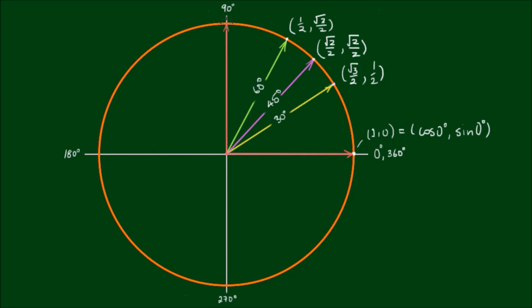Similarly for 90 degrees, the Cartesian coordinates here are 0, 1. And thus the cos of 90 degrees is equal to 0, and the sin of 90 degrees is equal to 1.